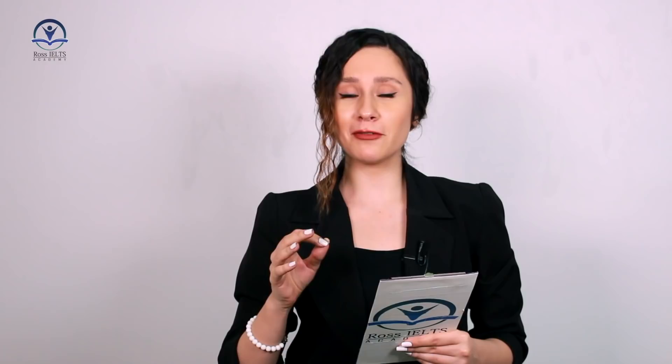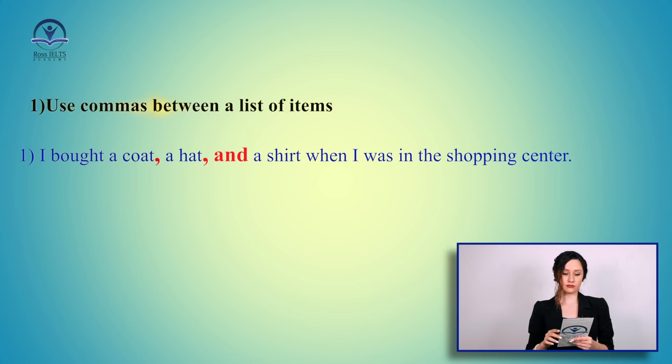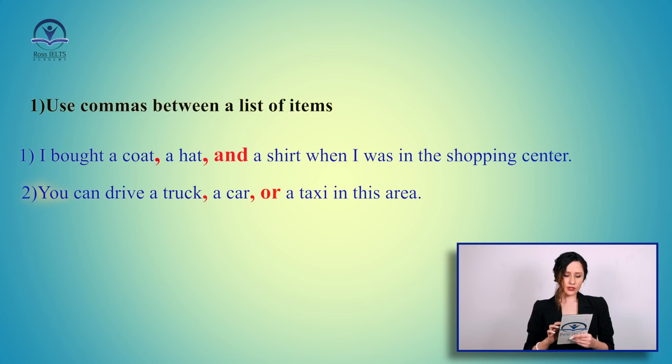First of all, you can use commas between a list of items — to separate a list of things. For example: I bought a coat, a hat, and a shirt when I was in the shopping center. Or: you can drive a truck, a car, or a taxi in this area. As you can see, after each of the first two items you have a comma. The important point is that before the words 'and', 'or', or their alternatives which are followed by the last item, you should use a comma as well.